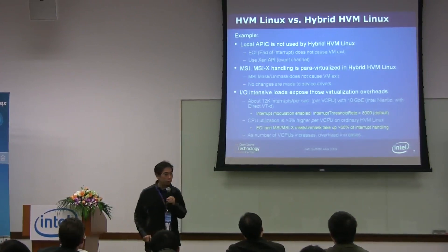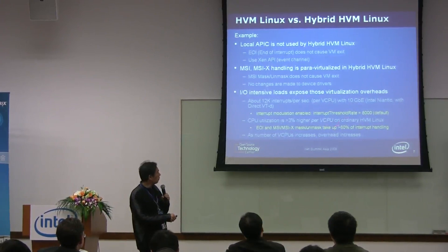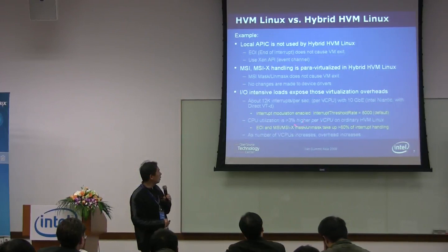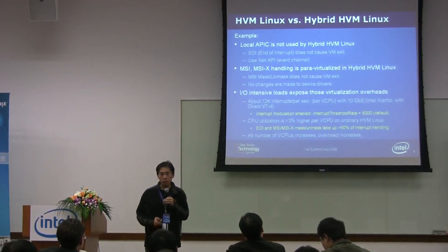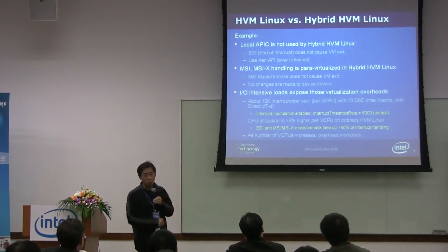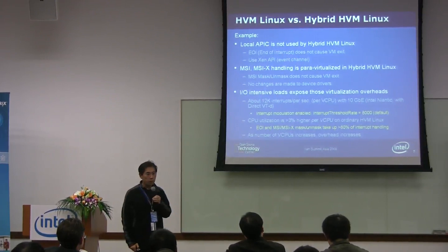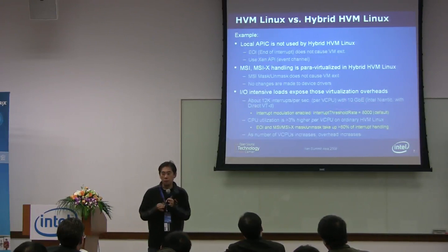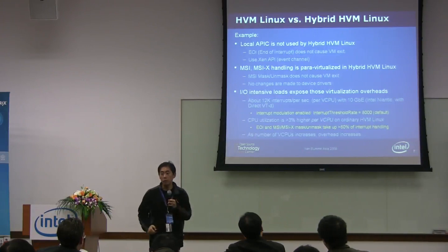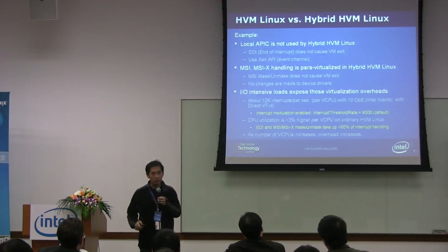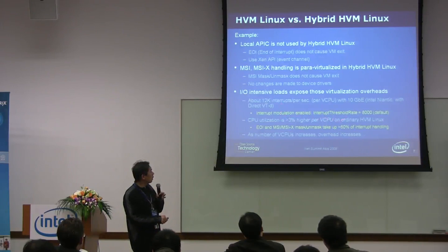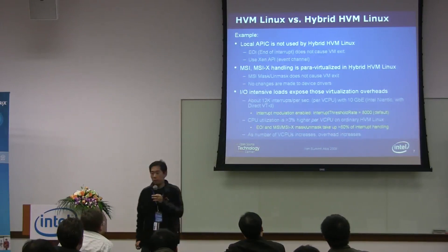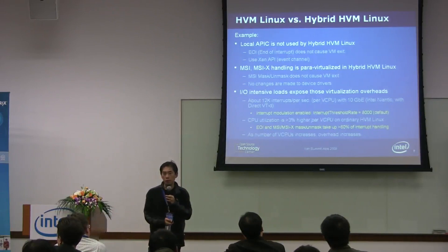Based on our measurement, we are getting more than 3% per CPU. The issue is, even when we increase the number of CPUs, these devices are so powerful. So if you have, for example, 4 CPUs, still each CPU can get this many interrupts. So with hybrid, we don't need to get the VM exit, and we can basically save 60% of the CPU cycles for interrupts.